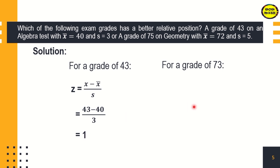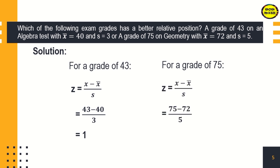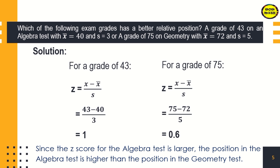For the geometry test with a grade of 75: 75 minus 72 divided by 5, and that is 0.6. Since the z-score for the algebra test is 1 and for geometry it is 0.6, the z-score for algebra is larger. Therefore, the position in the algebra test is higher than the position in the geometry test.